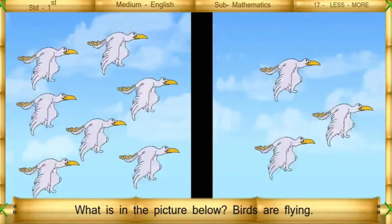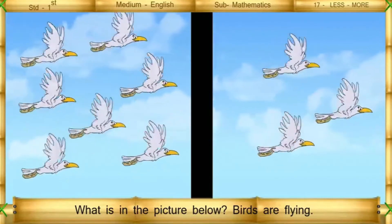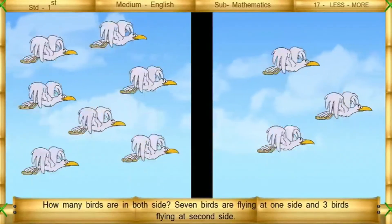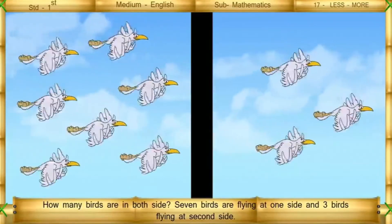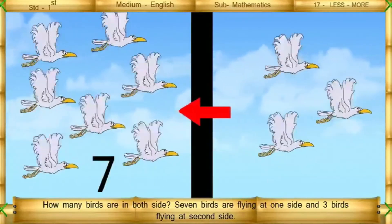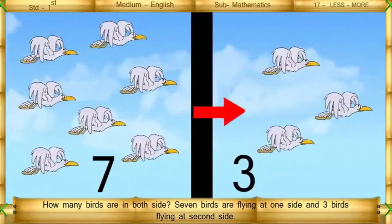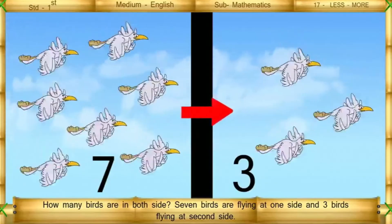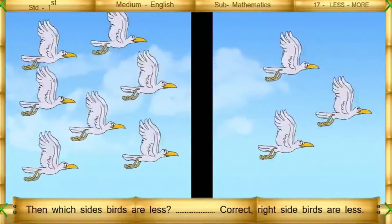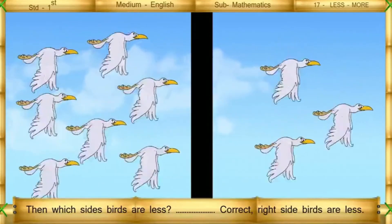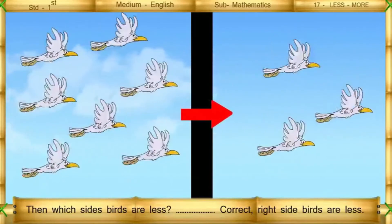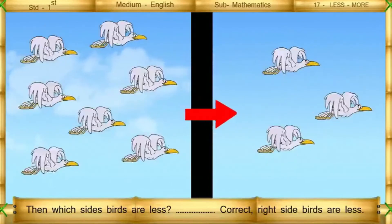What is in the picture below? Birds are flying. How many birds are there on both sides? 7 birds are flying on one side and 3 birds are flying on the second side. Then which side's birds are less? Right side birds are less.